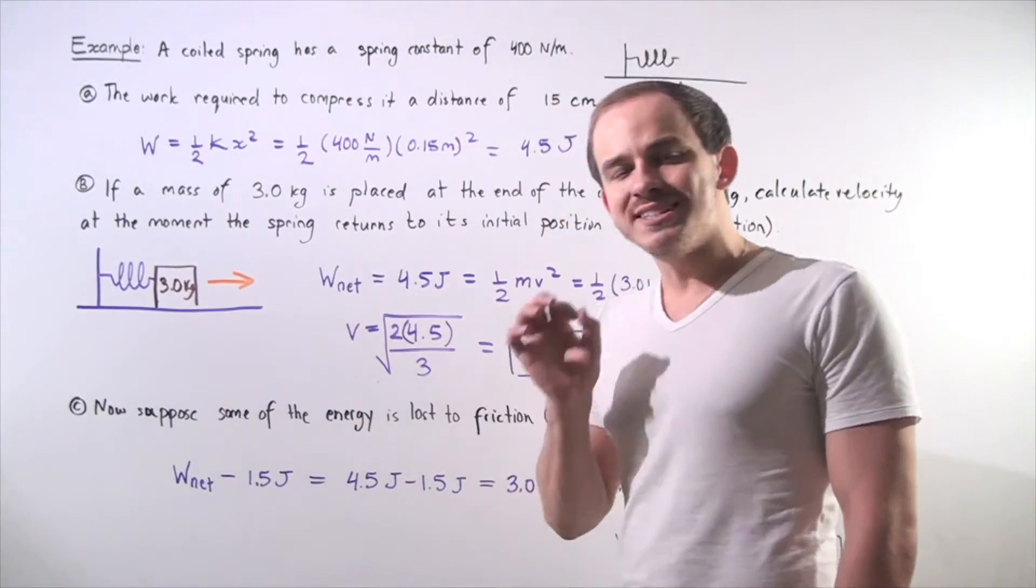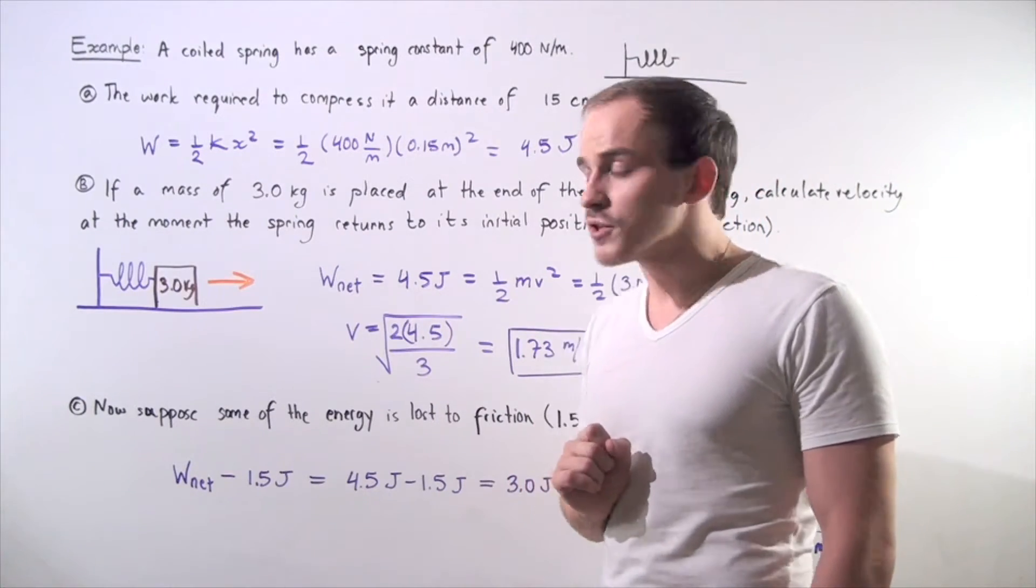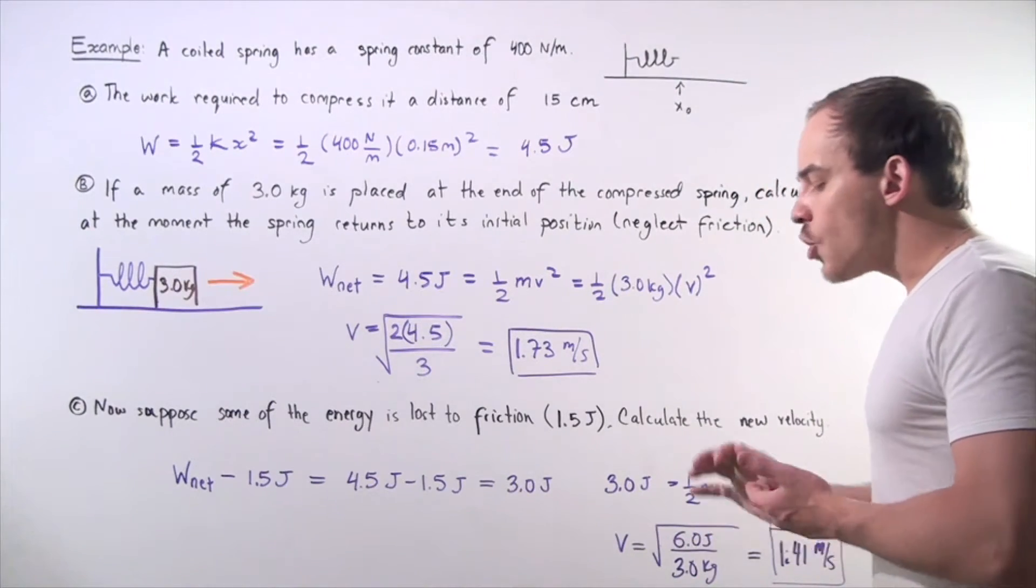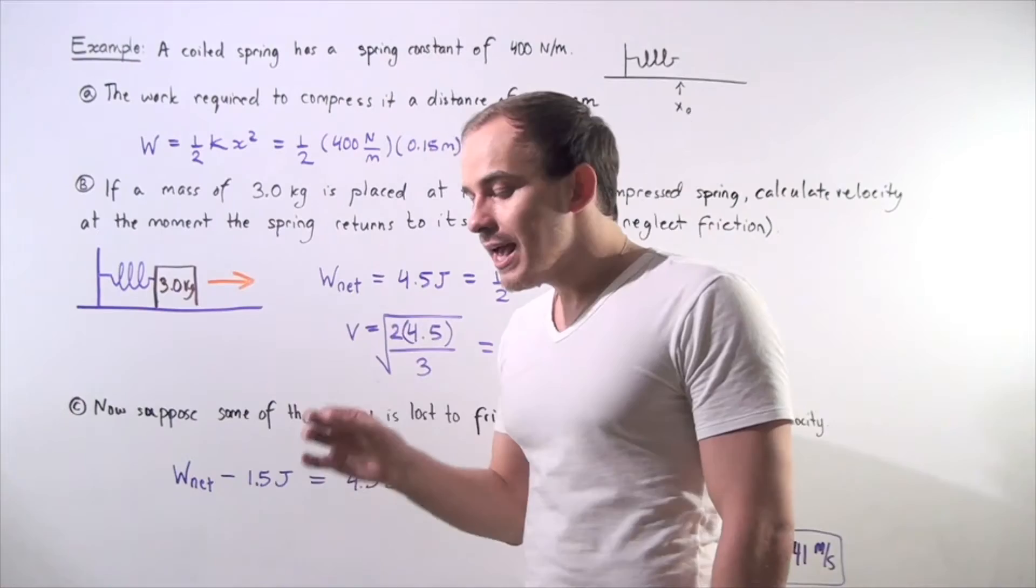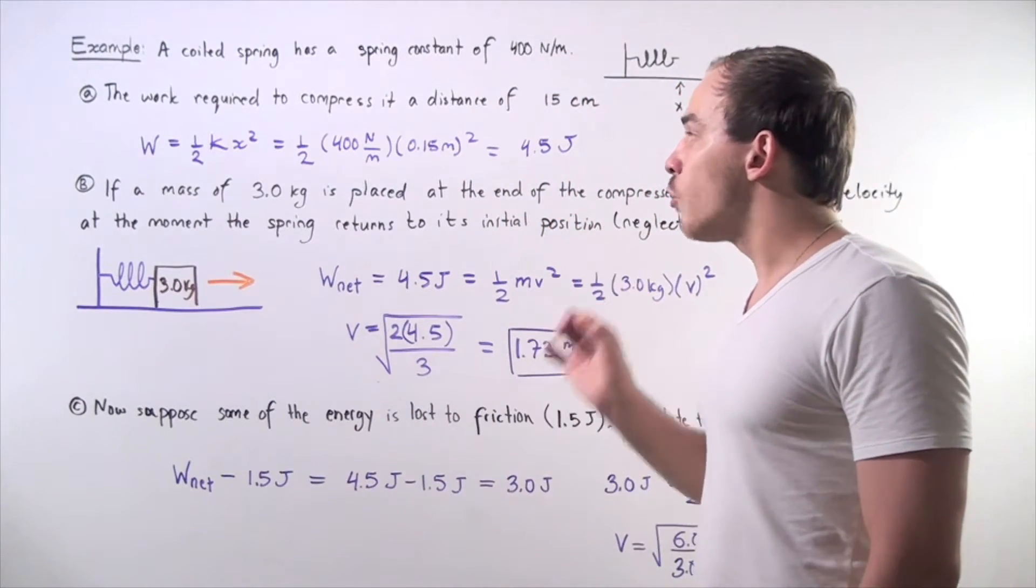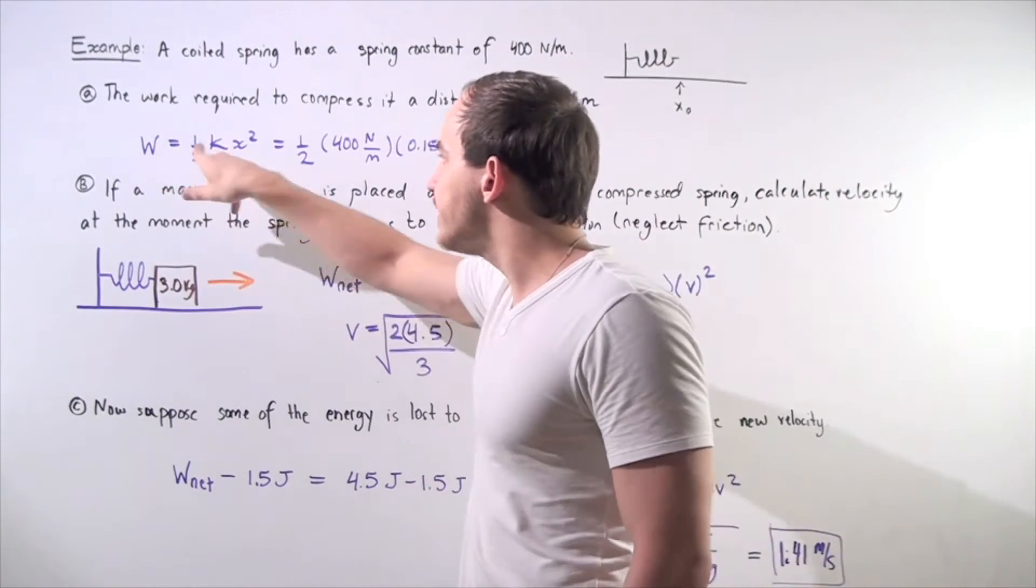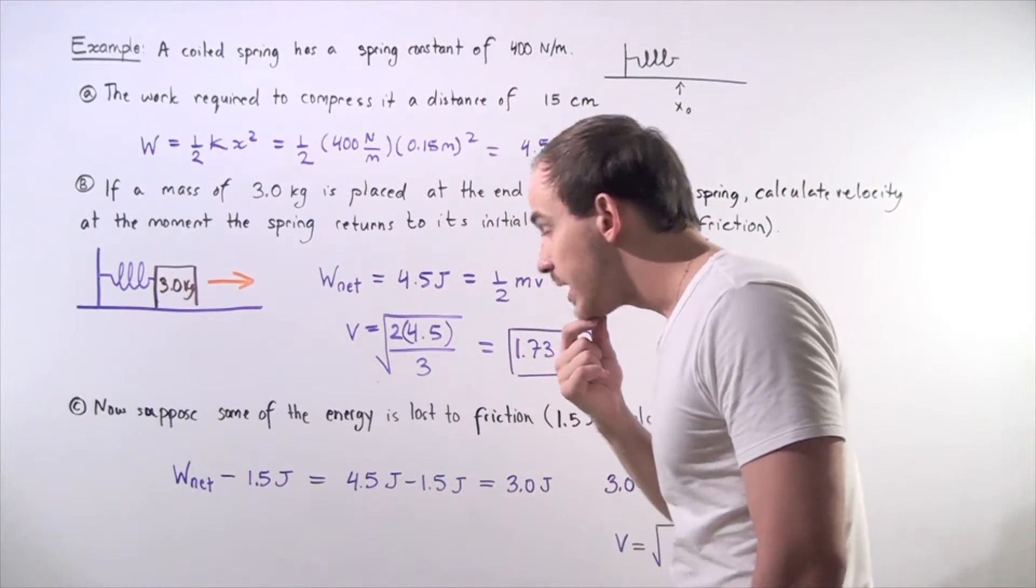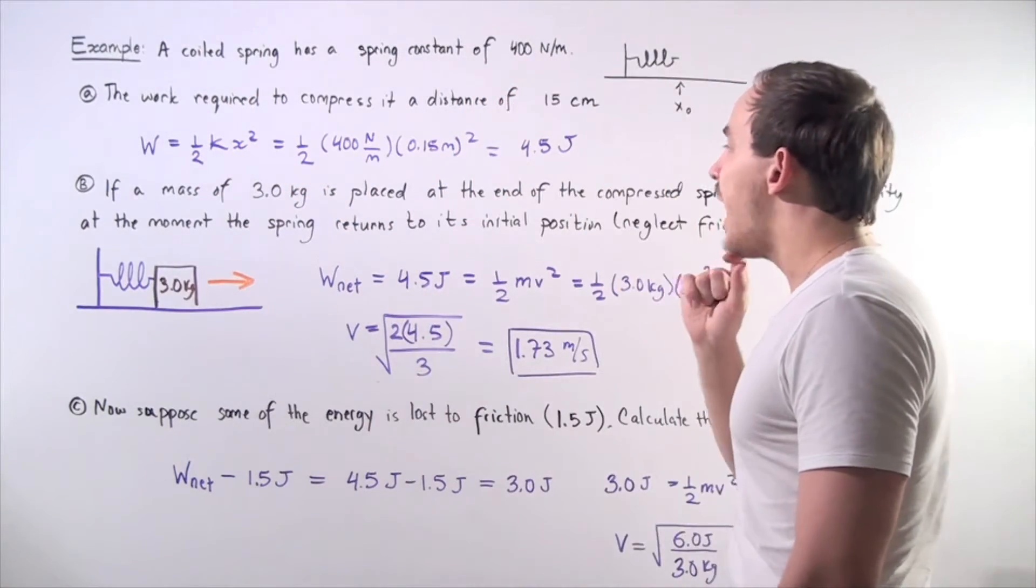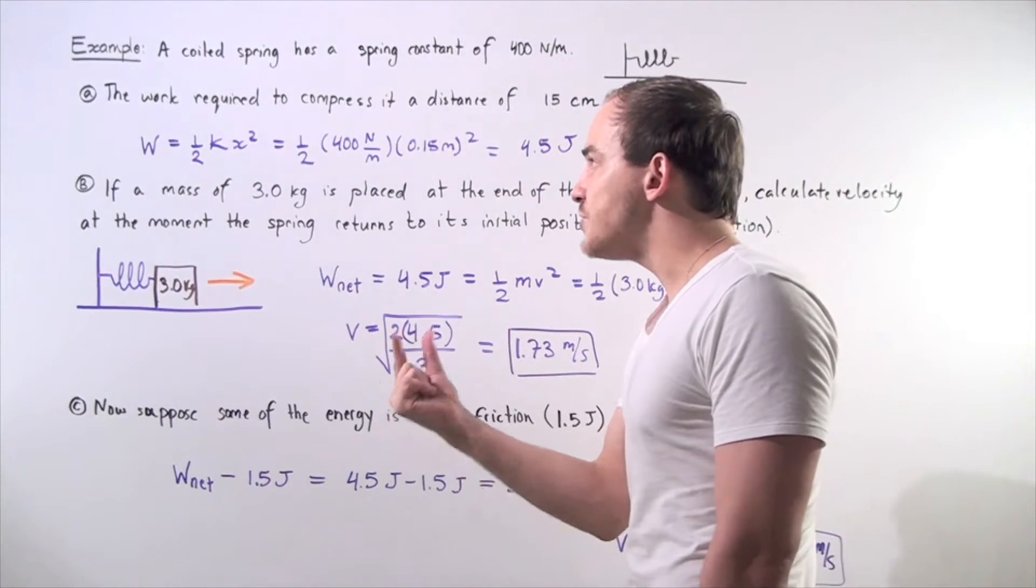In part A, we want to calculate the work required to compress our spring a distance of 15 centimeters. Recall that the force in a spring is not constant, and the formula for the work as a result of the spring force is given by the following equation. The work is equal to one-half times k, our spring constant, times the square of our displacement or change in position.